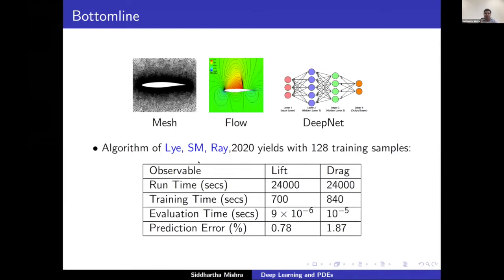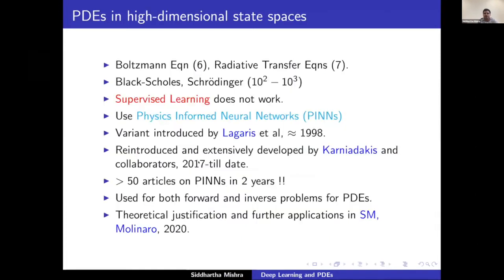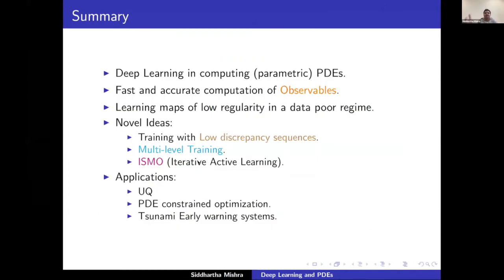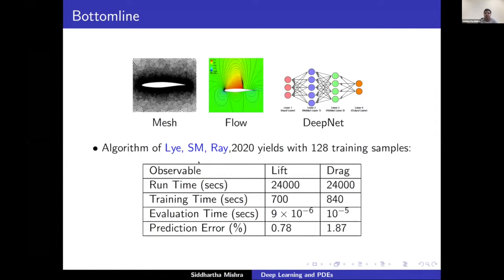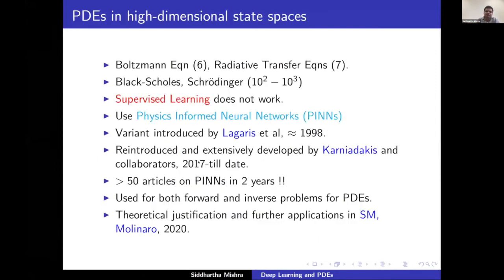On unsupervised learning: the supervised approach requires a solver for each parameter draw. But for Boltzmann or radiative transfer, a single sample is extremely expensive because dimensionality is very high, so supervised learning may not work. One alternative is physics-informed neural networks (PINNs), which have been revitalized by Karniadakis and his group. We have provided theoretical justification and focused on high-dimensional applications.